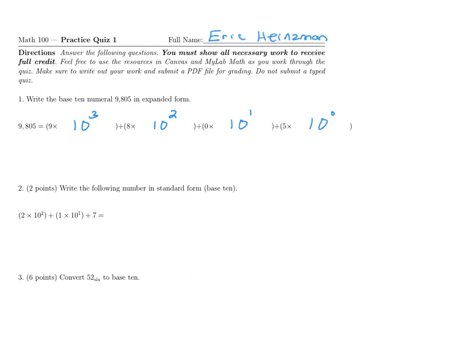If we start with 2 times 10 squared, that is 2 times 100, plus 1 times 10, and we have plus 7. To simplify this, this is 200 plus 10 plus 7, and if we add all the parts together, that's 217. And this is the final answer for this question.